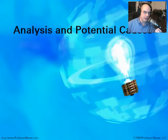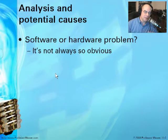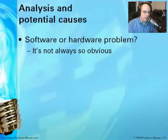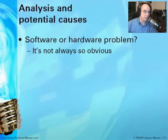Now let's do some analysis to determine where the problem might be caused. You're going to start by determining whether it's a software or hardware problem. It's not always obvious — sometimes a software error is caused by something going wrong with the hardware, such as memory problems. Or you might get a hardware error at startup that says there's a problem with memory and the system won't even start the operating system. That distinction determines what you do next.